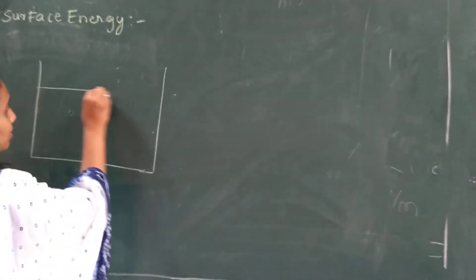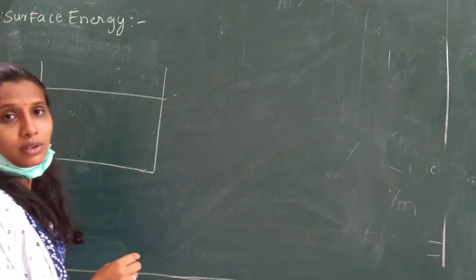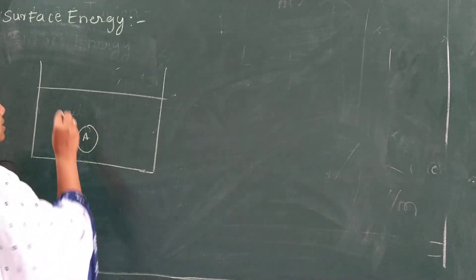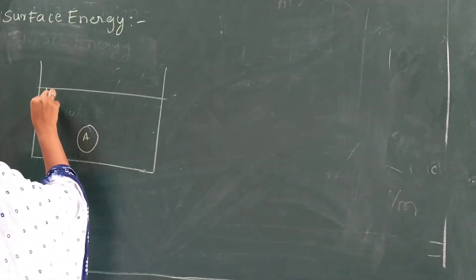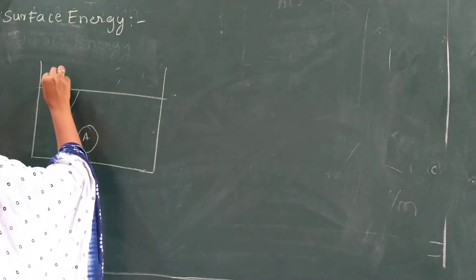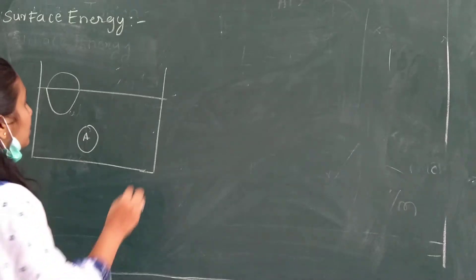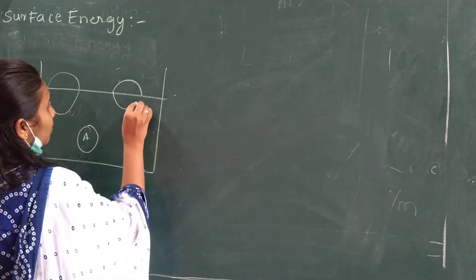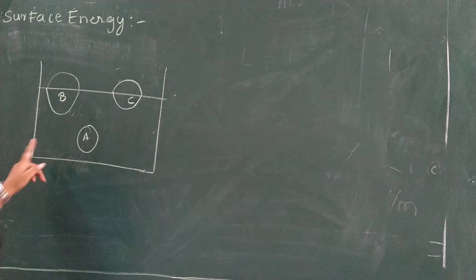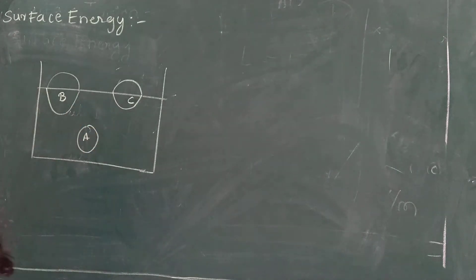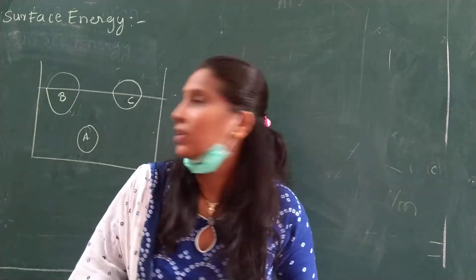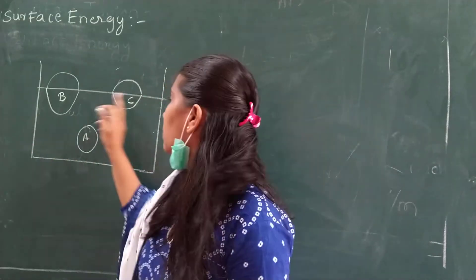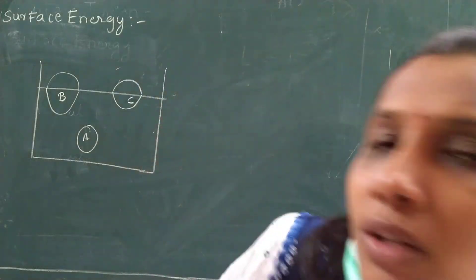Suppose this is my glass beaker and this is my surface of water. We saw three molecules at three different positions. Molecule A was completely inside the liquid. Molecule B had the larger part lying inside the liquid and about 30% lying outside. Molecule C was half outside and half inside the liquid. Each had an imaginary sphere of influence around them.